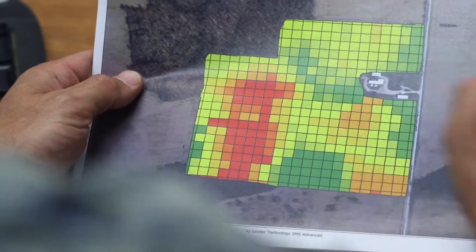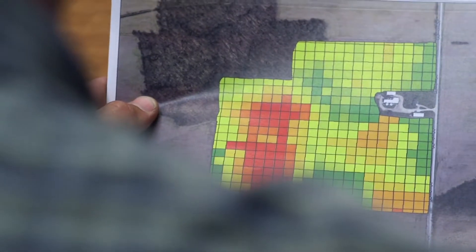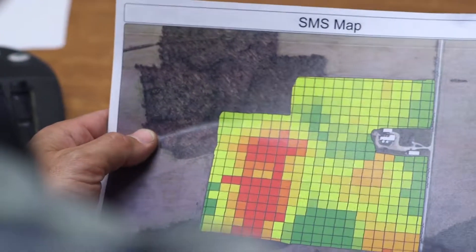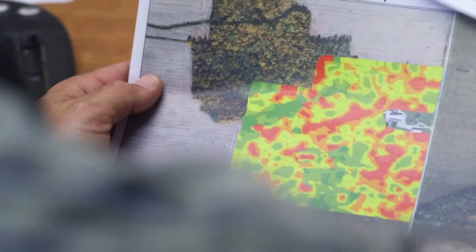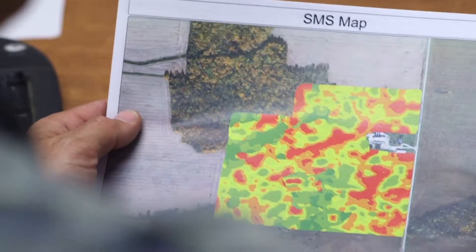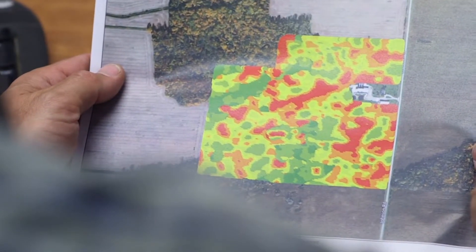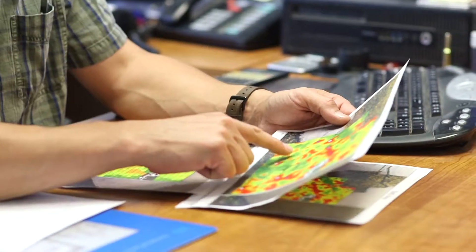One of the challenges that we had with our old soil sampling technology is that it didn't give us enough detail. One of the things that soil optics does is it gives way more detail. It maps out all of the variability in the soil.